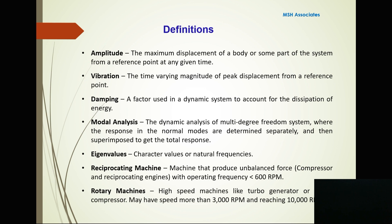Modal analysis is the dynamic analysis of a multi-degree-of-freedom system where the response in the normal modes is determined separately and then superimposed to get the total response. Eigenvalues are the characteristic values or natural frequencies. Reciprocating machines produce unbalanced forces — for example, compressors and reciprocating engines — with operating frequency less than 600 rpm. Rotary machines are high-speed machines like turbo generators or rotary compressors, which may have speeds above 3000 rpm and up to 10,000 rpm.